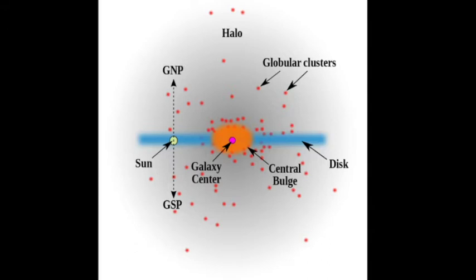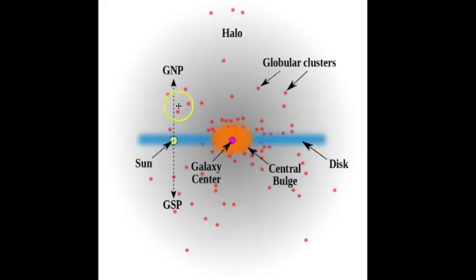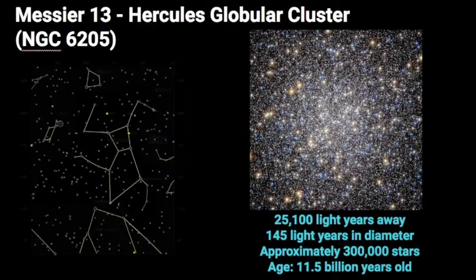Here is a depiction of what our galaxy looks like. We have the nucleus of the galaxy here, and then we have the spiral arms coming out. The globular star clusters are really situated on the outer edges of the galaxy, located within the halo of the galaxy.